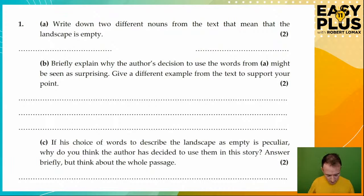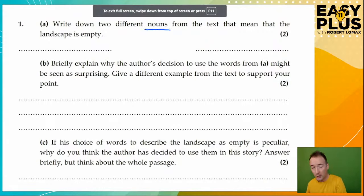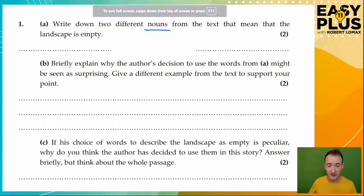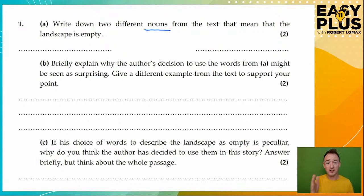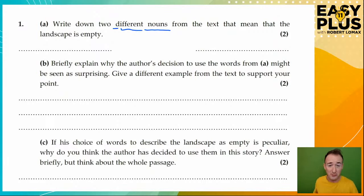Question one, A. Write down two different nouns from the text that mean that the landscape is empty. Always look at the detail — nouns, you know what a noun is: it's a thing word, like a name, but it can also be the name of an idea, like hunger. Whereas 'hungry' would be an adjective — a describing word. 'Different' is important, so not the same word twice, even if it appears in the text twice.